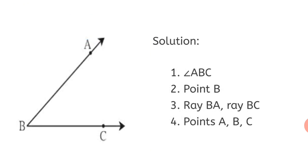So this you already know. The solution: the name of the angle is Angle ABC. The name of its vertex is Point B. The names of its arms are Ray BA and Ray BC. And finally, the names of the points marked on its arms are Point A, Point B, and Point C.